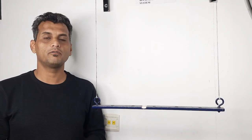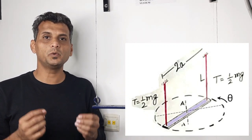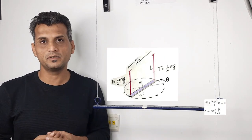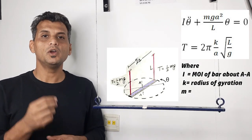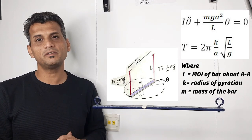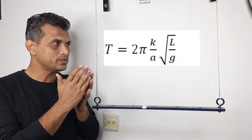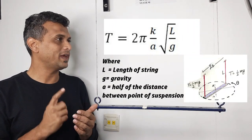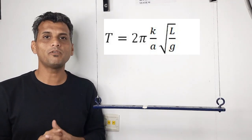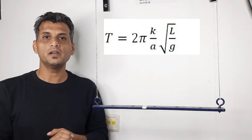Looking at the mathematical model of the Bifilar suspension system, a bar is suspended by two strings separated a distance apart, and the length of the string is L. Applying Newton's law or D'Alembert's principle, I get the equation of motion. Using this equation, I can obtain the time period or natural frequency, and that formula is what I will apply to get the radius of gyration. Knowing L, G, and the distance A between the two strings, the only unknown is K. So if I measure the time period, I will be able to get the radius of gyration.